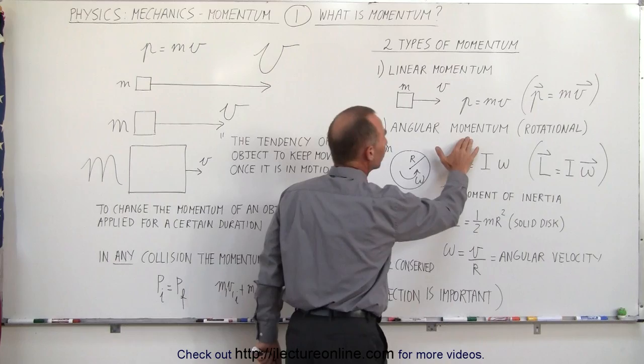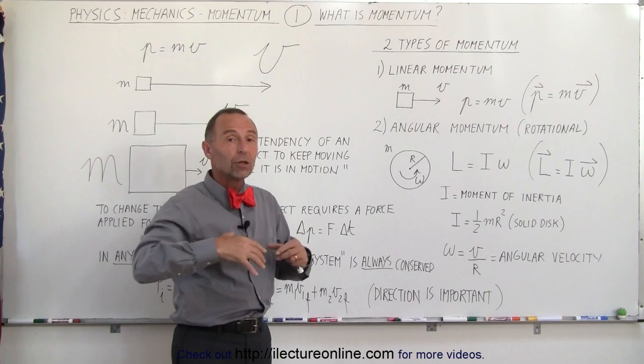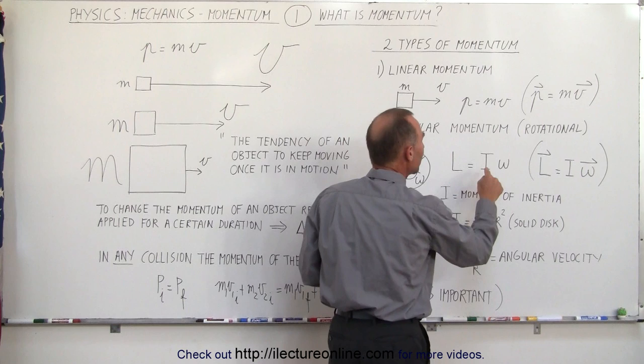There's a second type of momentum called angular momentum. We can also think of it as rotational momentum. An object that is rotating has momentum—the larger the object, the more mass, the faster it's moving, the more angular momentum it has. We use the letter L to indicate angular momentum.